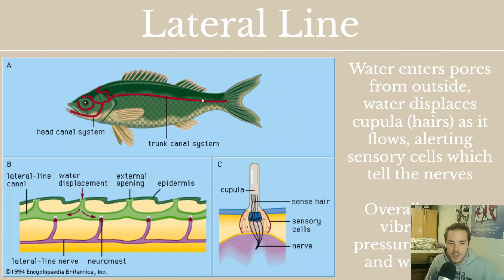The lateral line will generally run down the side of the fish. If the pectoral fin is very high up — as in more modern fish — the lateral line will actually hump above it, because you don't want to sense your own pectoral fin moving. On some fish, those lateral line pores also make their way onto the head and even onto the dentary.